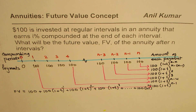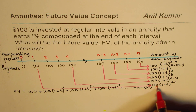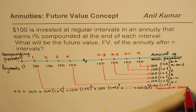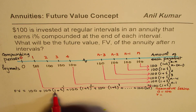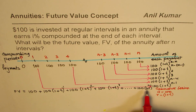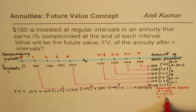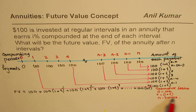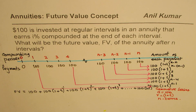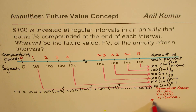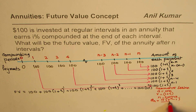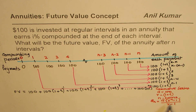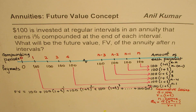This geometric series has first term a = 100, common ratio r = (1 + i), and there are N terms (from power 0 to N minus 1). We can apply the geometric series sum formula to add all of these. The formula for the sum of N terms of a geometric series is: S(n) = a times (r^n minus 1) divided by (r minus 1). In our case, a is 100, r is (1 + i), and there are N terms.